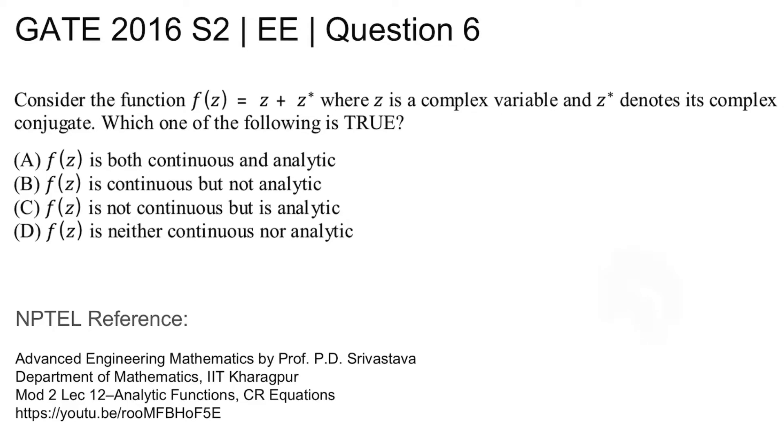This is GATE 2016 Set 2 Electrical Question Number 6. Consider the function f(z) equal to z plus z star, where z is a complex variable and z star denotes its complex conjugate. Which one of the following is true?